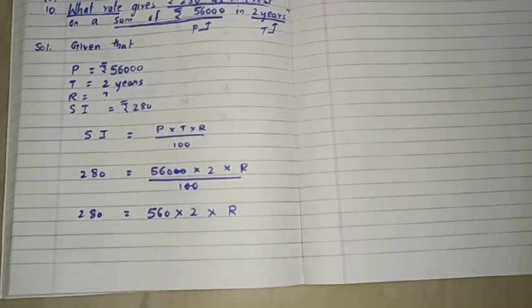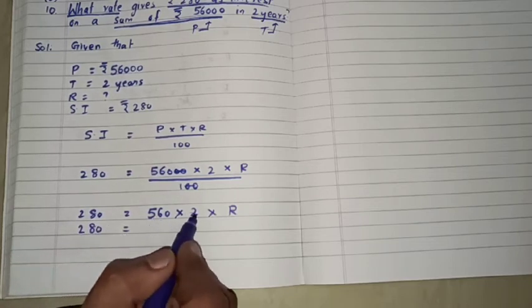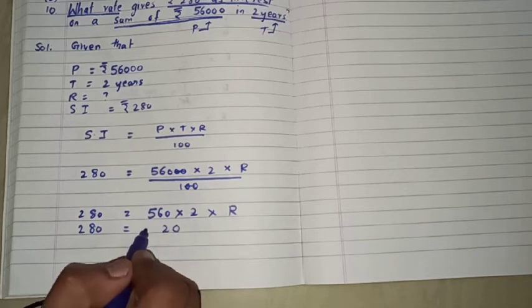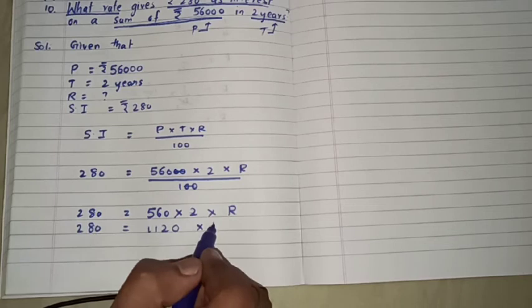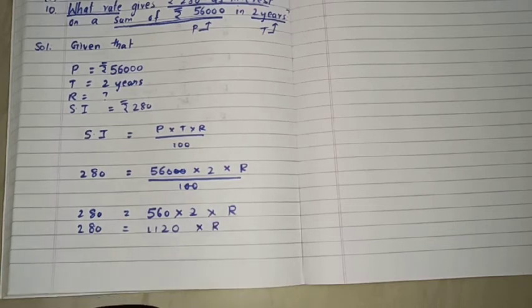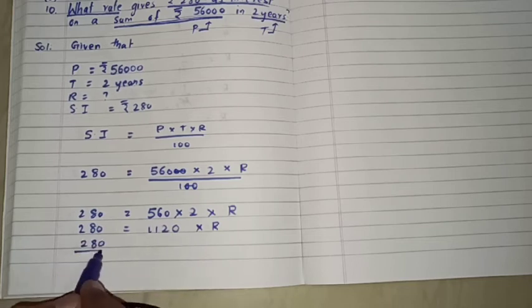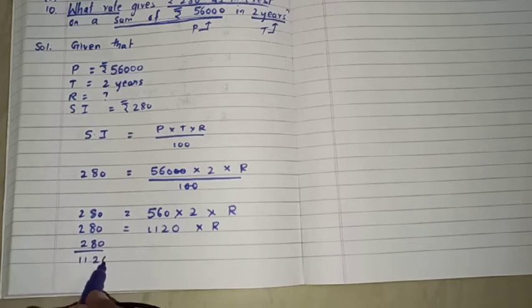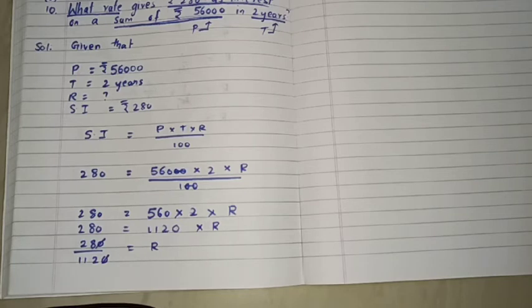Ab next step me, yane multiply karne ke baad humko 1120 into R ae ga. Abh humko R chahiye toh yane into 1120 udher chala jaya, toh yane kya hoga? 280 by 1120 is equal to R.